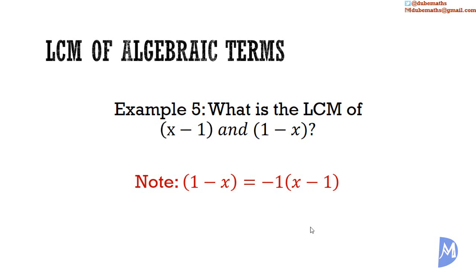So, we have just seen that -1 multiplied by (x - 1) is the same as (1 - x). Thus, there are two factors: a number, and (x - 1). The LCM of the numbers is -1, that's the only number we have. And the highest power of (x - 1) is (x - 1). So, the LCM is -1(x - 1).